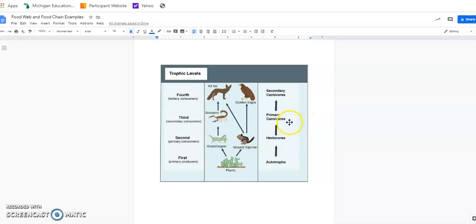Next, you move up to the primary carnivores. In this case, it is a scorpion. It is the secondary consumers that would be eating the herbivores, scorpion. And finally, our secondary carnivores, the apex predators within this food web. The tertiary consumers, the fourth level, is a kit fox and a golden eagle. So again, in this case, these are the largest organisms within this food web.